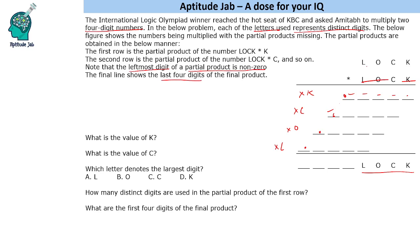Interestingly, the last four digits of the product are also the four digits being multiplied. So we need to find the missing digits. Looking at the problem, the last digit is k, and k multiplied by k must give k as the last digit. So k × k should end in k.